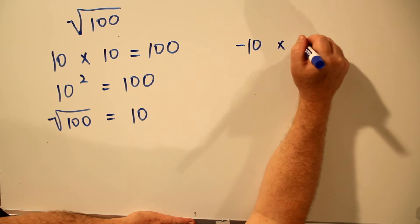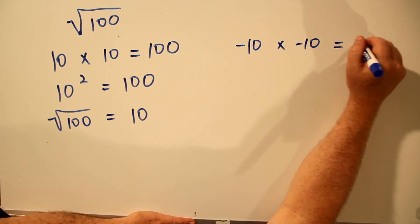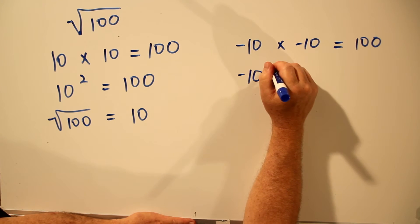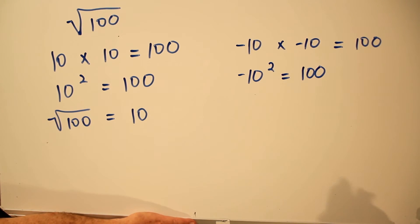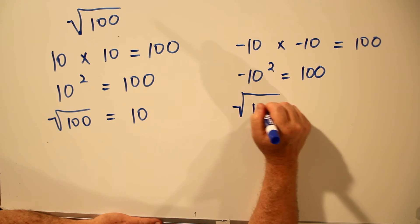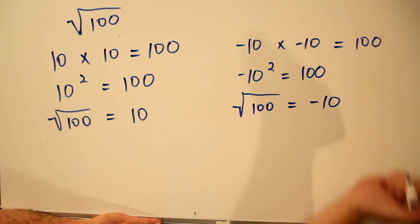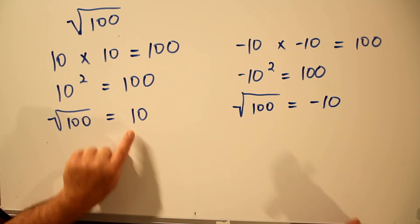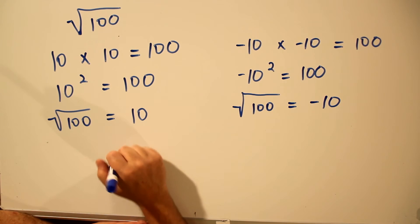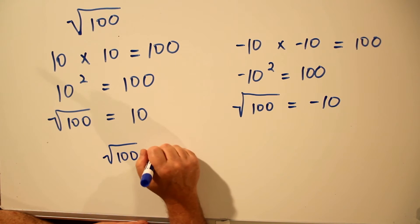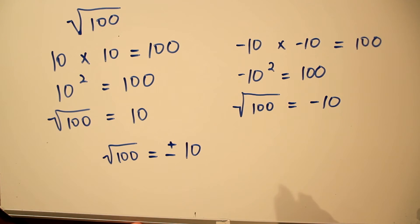But remember, negative 10 times negative 10 is positive 100. Negative 10 squared is positive 100. Therefore, the square root of 100 is minus 10. So it's positive 10, and it's minus 10. The square root of 100 equals plus or minus 10, and that's how we write it.